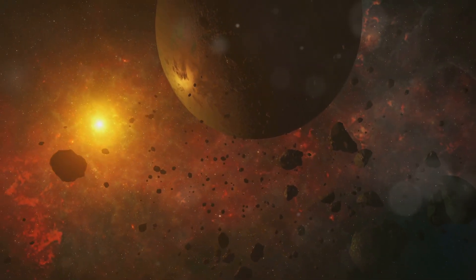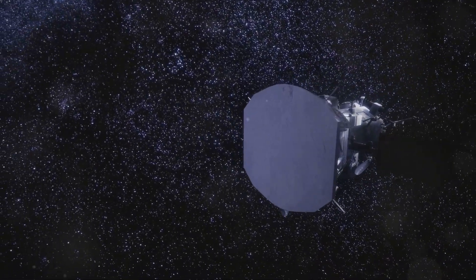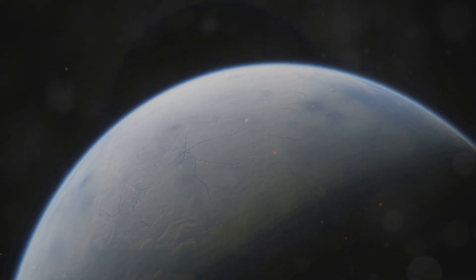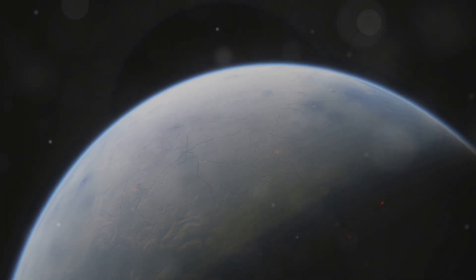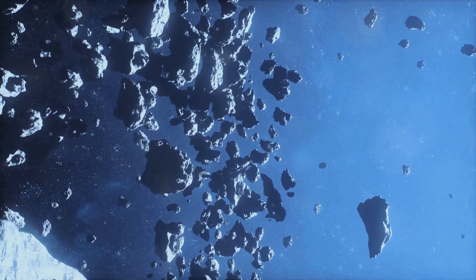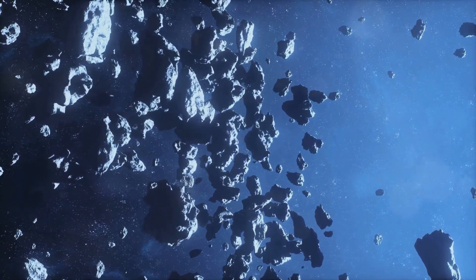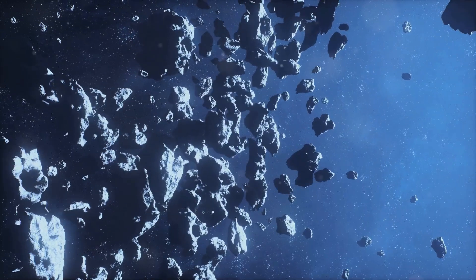Mystery 10, the Kuiper Cliff. We begin our journey at the edge of our solar system in a region known as the Kuiper Belt. Here, icy bodies and dwarf planets drift in the cold darkness until they don't. Beyond a certain point, there's a sudden drop, a cliff if you will, where the number of objects in the Kuiper Belt sharply declines. This is the Kuiper Cliff,